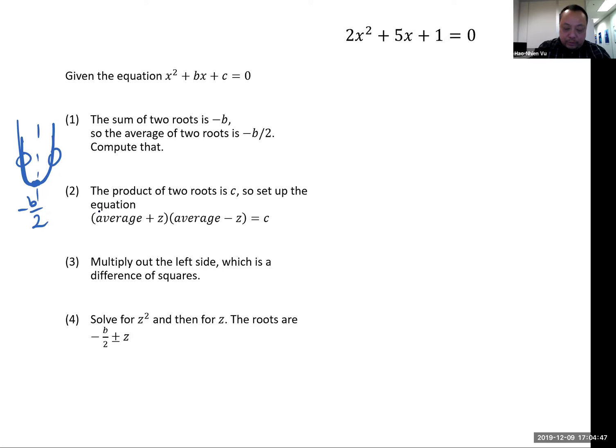And so the two roots, one is going to be the average plus some z, and the other is going to be the average minus some z, and the two roots have to multiply to the c term. So if we multiply on the left side, we get the difference of squares, there's no z term, you solve for z squared, and you take the square root of that, and you get z. So let's go ahead and do this example.